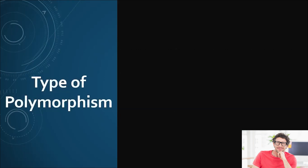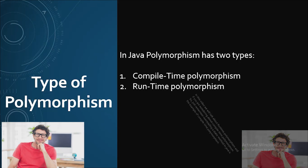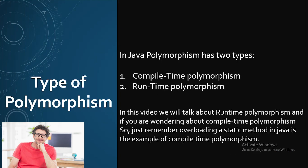Now let's talk about the types of polymorphism. Polymorphism has two types: number one is compile time polymorphism and the other is runtime polymorphism. In this video we will talk about runtime polymorphism. If you are wondering what compile time polymorphism is, just remember that method overloading, which we have already covered in Java, is an example of compile time polymorphism.